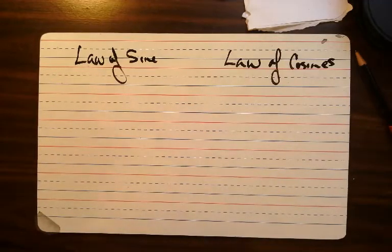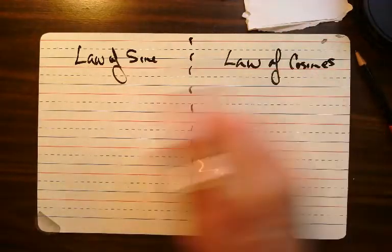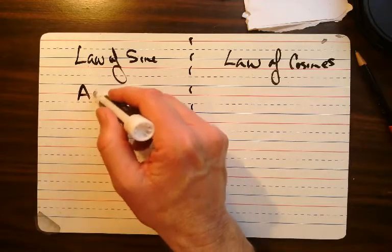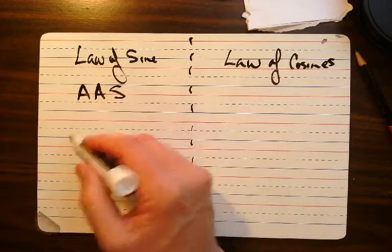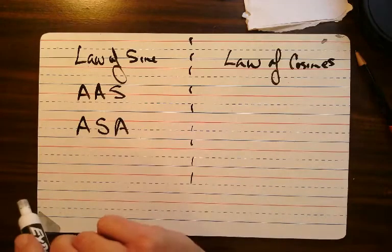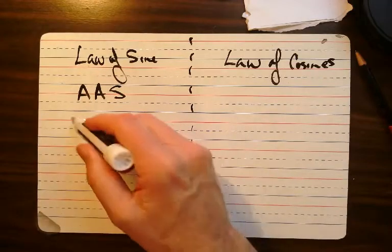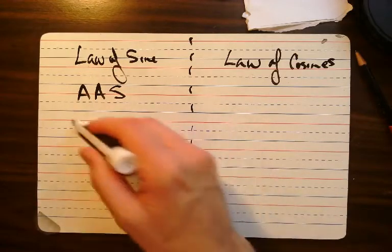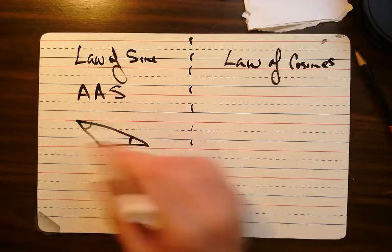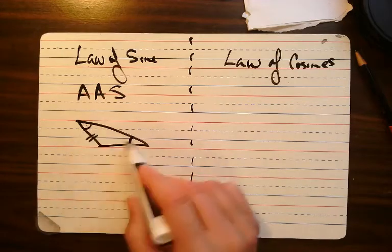Today we're going to learn the law of sines, or law of cosines actually, but we need to know when we can use one or the other. Whenever you are given two angles and a side — so you remember this from geometry — if you're given two angles and a side, as long as you know two angles and a side that's not in between, so if I know this side right here and these two angles, that's angle-angle-side.